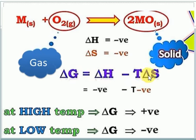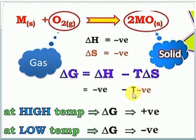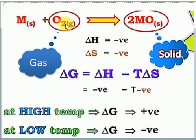When gas becomes solid, entropy value is negative. At high temperatures, ΔG increases toward positive values. According to Le Chatelier's principle, for an exothermic reaction, increasing temperature drives the reaction in the backward direction. That is why metal oxide formation reactions are more favorable at low temperatures — at low temperature, ΔG is negative and the reaction is feasible.